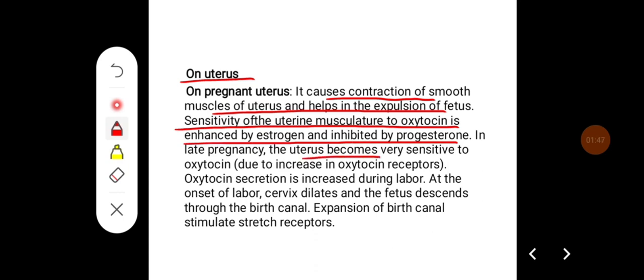In late pregnancy, the uterus becomes very sensitive to oxytocin due to increased oxytocin receptors, and oxytocin secretion is increased during labor.